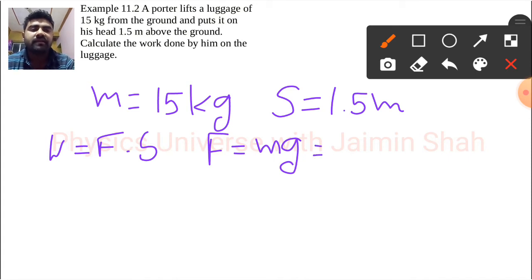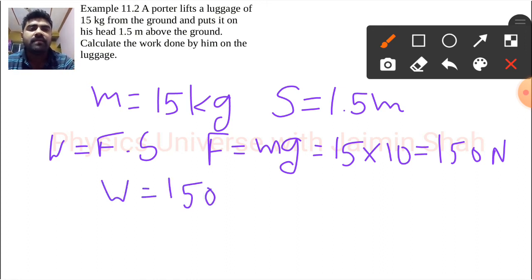gravitational acceleration. So 15 into 10, that will be 150. The force exerted on that luggage by the porter is 150 newton. Now we will put all this information in our main equation and we will get